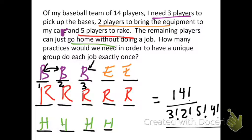But if I switched, you know, player 3's job with player 4's job, now player 3 would be bringing in the equipment, and player 4 would be picking up the bases. So, you can kind of model this problem as a word with 4 different letters, where, you know, they repeat, you know, B repeats 3 times, E repeats twice, R repeats 5 times, and H repeats 4 times.